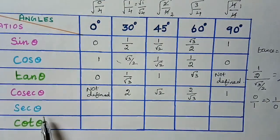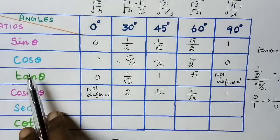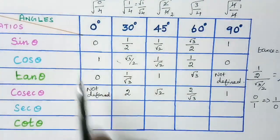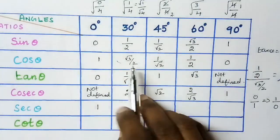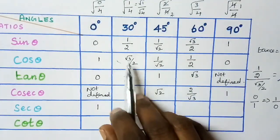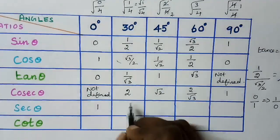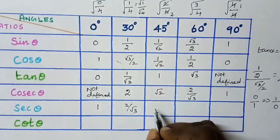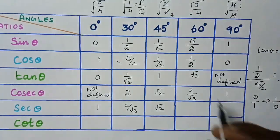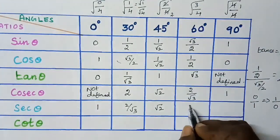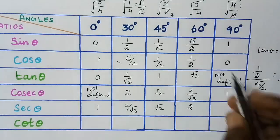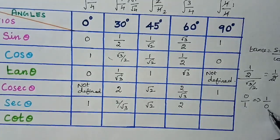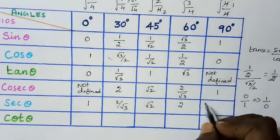Next, secant theta. Secant theta is the reciprocal of cos theta. So cos 0 degree is 1, and reciprocal of 1 is 1. Next, cos 30 degree is root 3 by 2, so reciprocal is 2 by root 3. Then 1 by root 2 gives root 2. Then 1 by 2 gives 2. Next cos 90 degree is 0, so reciprocal of 0 by 1 is 1 by 0, which is not defined.